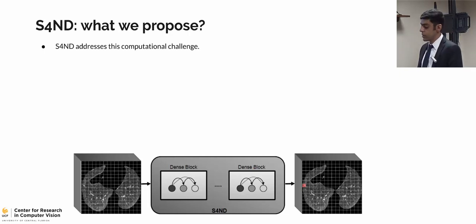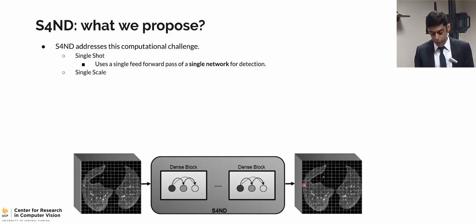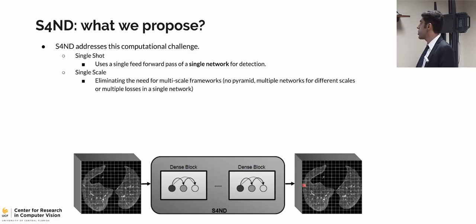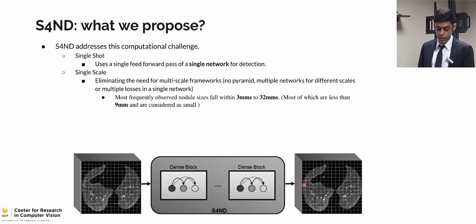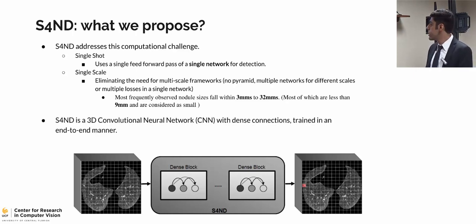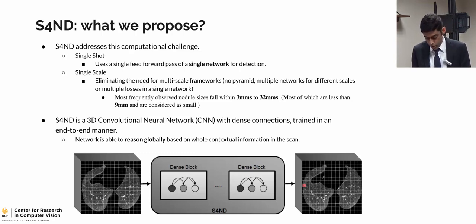What we propose is to address this computational challenge with a single-shot detector, using a single feed-forward path of a single network for detection of these tiny objects, in a single scale, which eliminates the need for multi-scale frameworks. The specific design of this architecture allows all the abnormalities to fit into one single scale. Our method is based on 3D convolutional neural networks, trained end-to-end. Benefiting from 3D CNNs, our model reasons globally and makes detection decisions based on the whole contextual information.